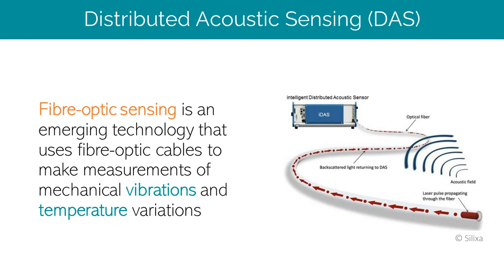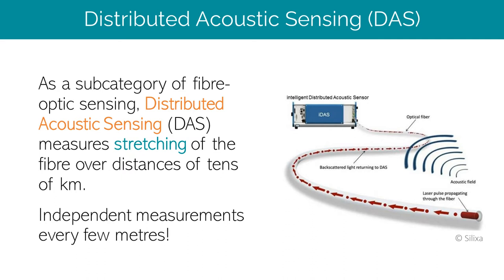Fiber optic sensing is an emerging technology that uses fiber optic cables to make measurements of mechanical vibrations and also of temperature variations. As a subcategory of fiber optic sensing, distributed acoustic sensing, or DAS for short, measures stretching and contraction of glass fiber at specific locations over distances of up to tens of kilometers. This means we can turn a fiber optic cable into an array of sensors which collects independent measurements of strain every few meters.